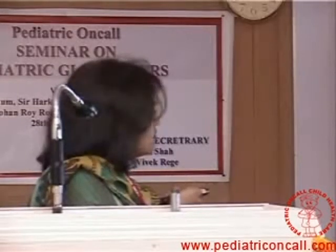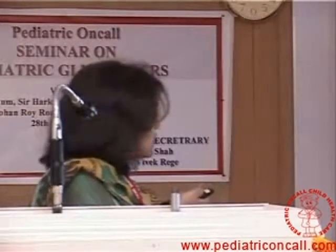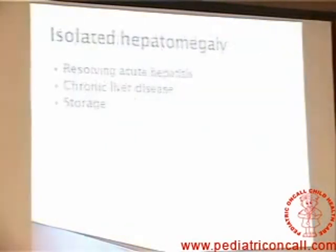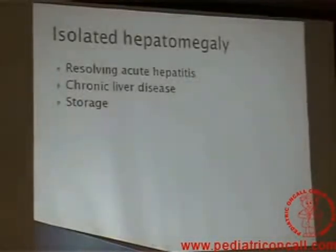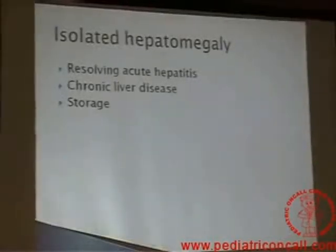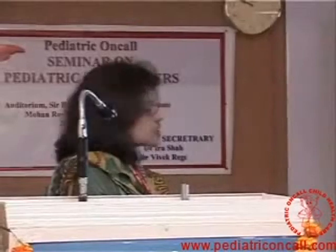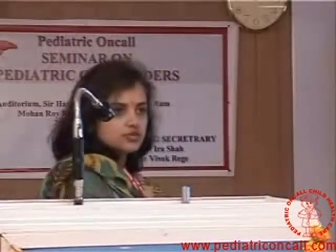With hepatomegaly and anemia, either the bone marrow is not forming or the liver has started producing extramedullary hematopoiesis. So causes include hemolytic anemia, Wilson disease, aplastic anemia, and chronic liver disease causing anemia. For isolated hepatomegaly without other features, either we missed the acute hepatitis and now the child has recovered — resolving acute hepatitis — or it is a compensated chronic liver disease or a storage disorder.